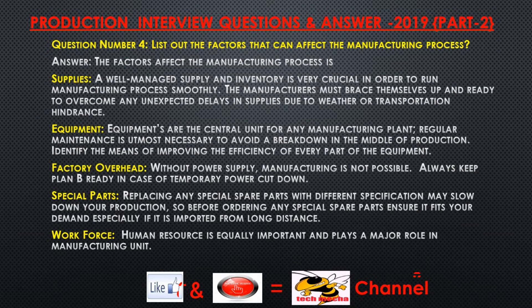Question number four: List out the factors that can affect the manufacturing process. Answer: Supplies — a well-managed supply and inventory is very crucial to run the manufacturing process smoothly. Manufacturers must be ready to overcome unexpected delays in supplies due to weather or transportation issues. Equipment — equipment is the central unit of any manufacturing plant; regular maintenance is essential to avoid breakdowns mid-production.